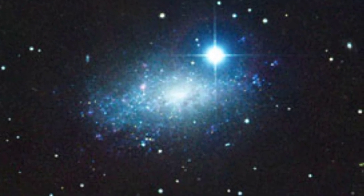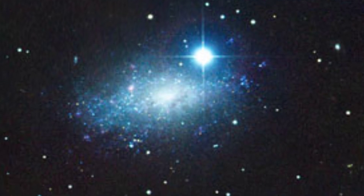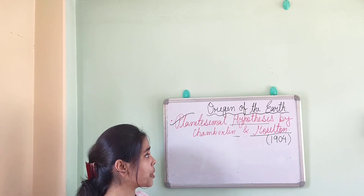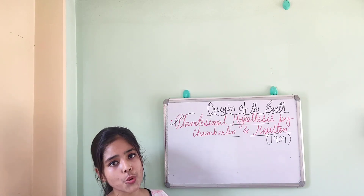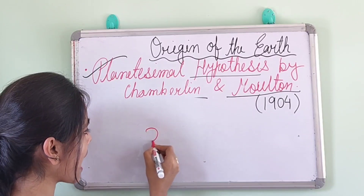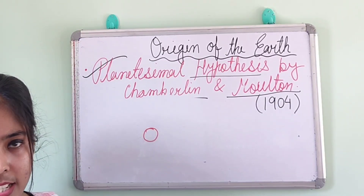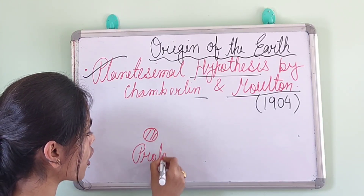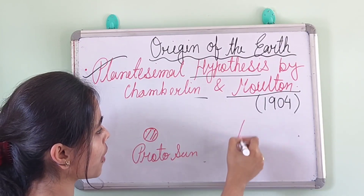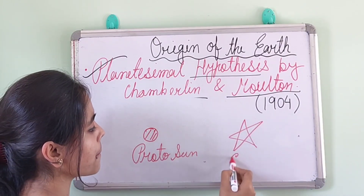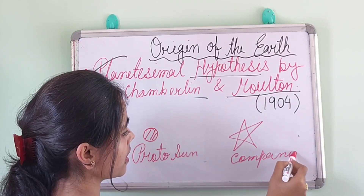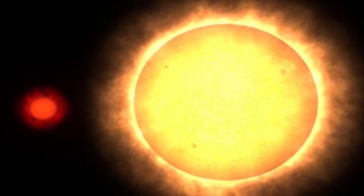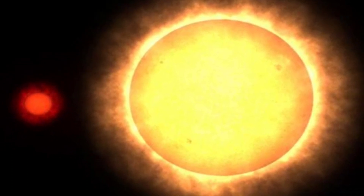The whole universe is very mysterious — nobody can actually predict what is going on there. That's why scientists assume something, and on the basis of these assumptions we can study several types of theories. So what is a planetesimal? Planetesimal means the small and tiny particles which behave like a planet in space. According to Chamberlain and Moulton, they assumed that in space there are two types of heavenly bodies present: one is known as our original sun or proto sun, and another one is the companion star.